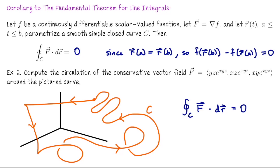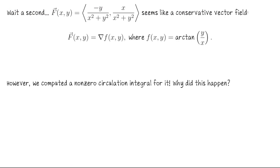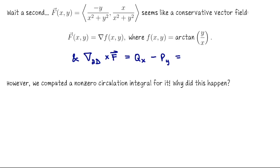I want to finish today with a nuance: we haven't talked too much about vector fields which are not defined on the entire space — all of R2 or all of R3. Consider the vector field F(x, y) = (−y/(x²+y²), x/(x²+y²)). It seems like this is conservative, because the scalar function little f(x, y) = arctan(y/x) has partial derivatives that take this form. Moreover, if you do the 2D scalar curl test — computing ∂Q/∂x minus ∂P/∂y — you'll get 0.